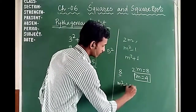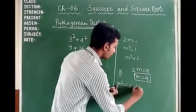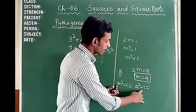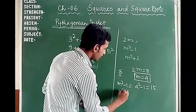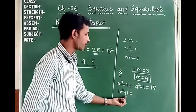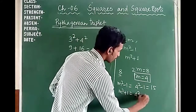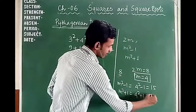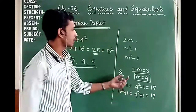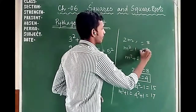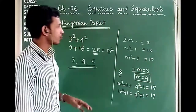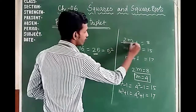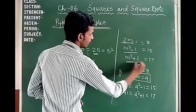With m equal to 4, the second number is m squared minus 1 equals 4 squared minus 1 equals 16 minus 1 equals 15. The third number is m squared plus 1 equals 4 squared plus 1 equals 17. So the Pythagorean triplet is 8, 15, and 17.